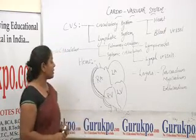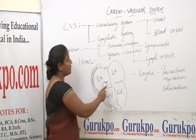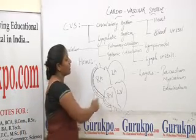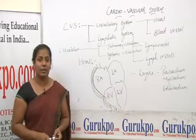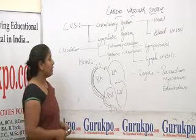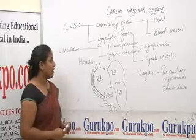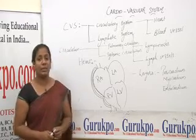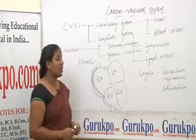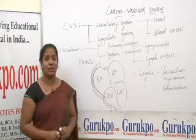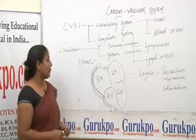In terms of interior structure, the heart is divided into four chambers. The upper two chambers are known as auricles, and the lower ones are ventricles. The upper two are divided into the right atrium and left atrium, and the lower ones are the right ventricle and left ventricle.